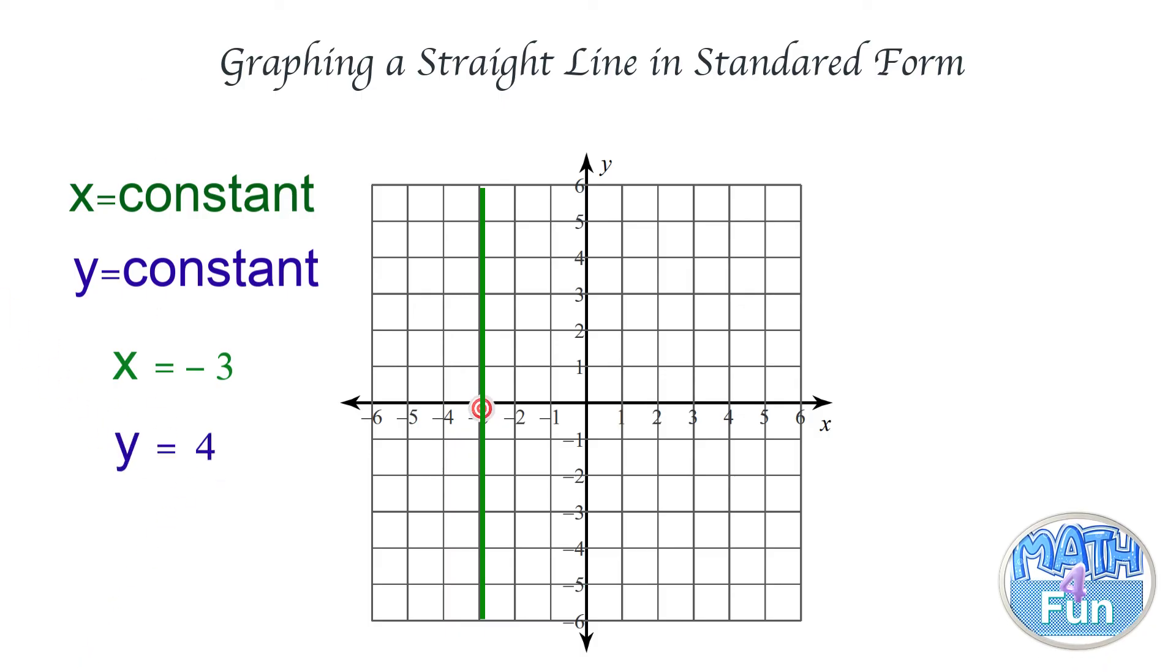When we have y = constant, in this case we go on the y-axis to the point (0, 4) and we draw a horizontal line for that case.